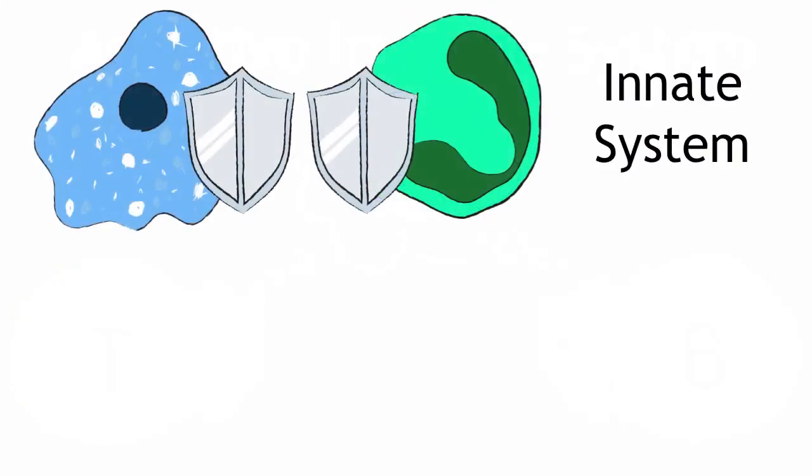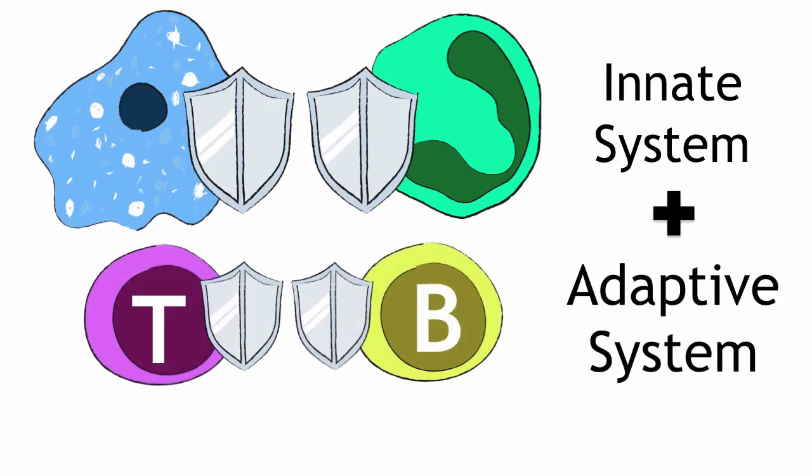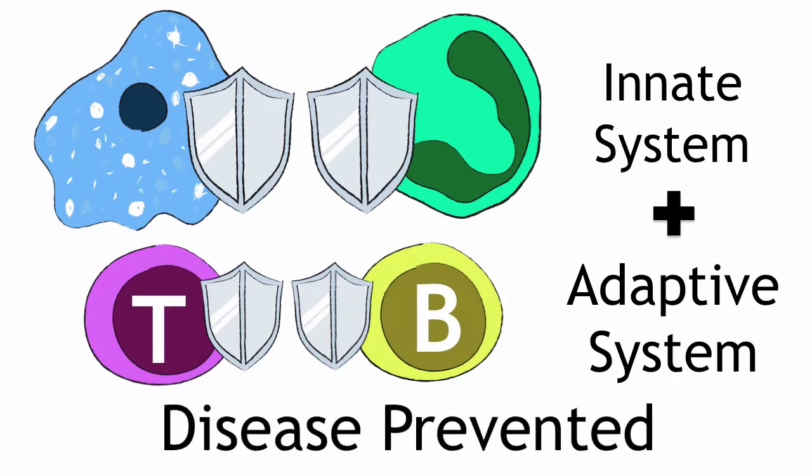Due to your innate immune system and your adaptive immune system working together, the bacteria can be cleared from the cut in your leg. Your immune system has successfully prevented the development of disease.